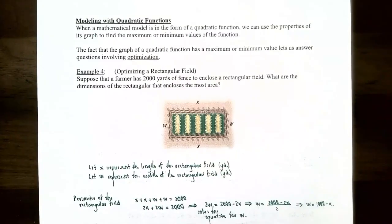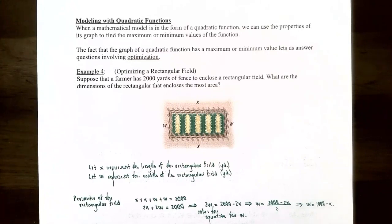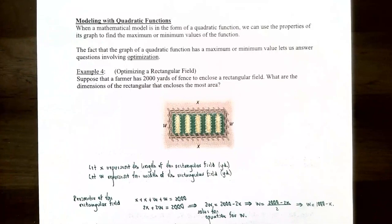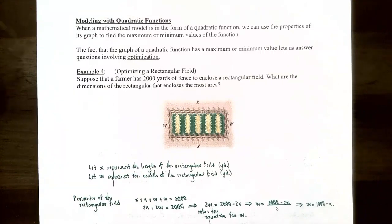Let's finish up talking about modeling with quadratic functions. We're going to construct a quadratic function that models a certain situation, with a couple of examples dealing with optimization — finding the maximum or minimum value of a quadratic function without graphing. When a mathematical model is of the form of a quadratic function, we can use the properties of its graph to find the maximum or minimum value based on the shape of the parabola.